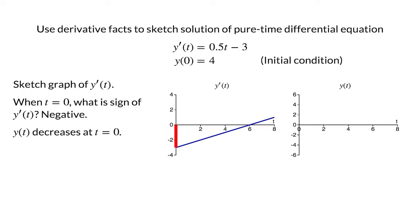Let's use this information to begin to sketch the solution y(t). We start at the initial condition, y(0) equals 4, and draw the graph of y(t) so that it decreases from this point.